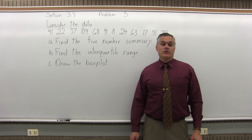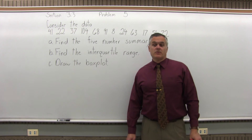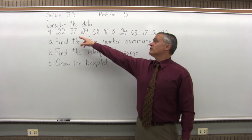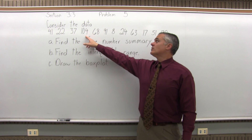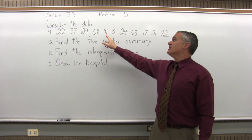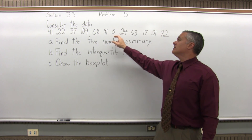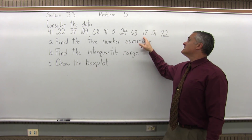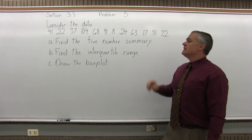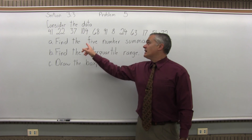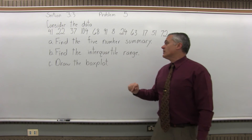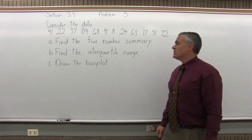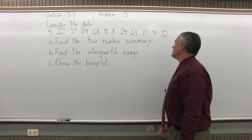This is Section 3.3, Problem 5. It says, consider the data: 41, 22, 37, 104, 68, 91, 8, 24, 63, 17, 51, and 72. Find the five-number summary, find the interquartile range, and draw the box plot.